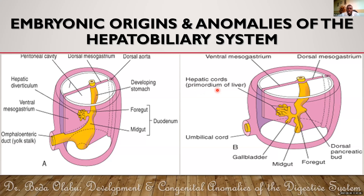The pars hepatica is the one that will form the hepatocytes of the liver. The caudal part is called the pars cystica, and the pars cystica is the one that will give rise to the gallbladder. So that is where the liver comes from, and that is where the gallbladder comes from.